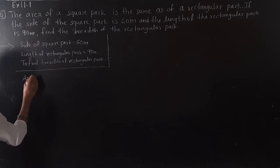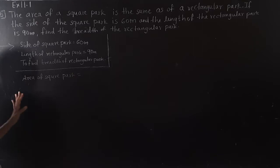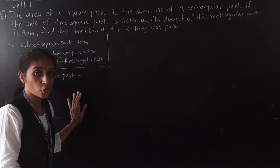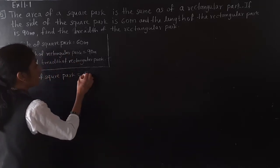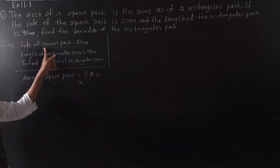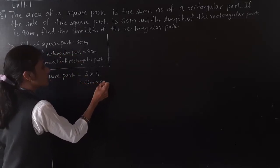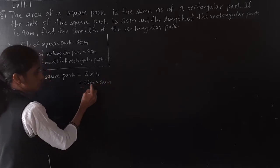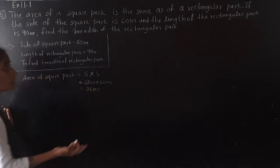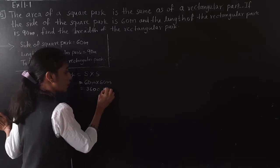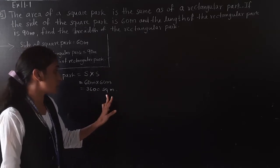Area of square park: what is the formula for area of square? Side multiplied by side, or side squared — we can write either. Side multiplied by side. Side of square park is 60 meter, so 60 meter multiplied by 60 meter gives 3600 square meter. Area of square park is 3600 square meter.